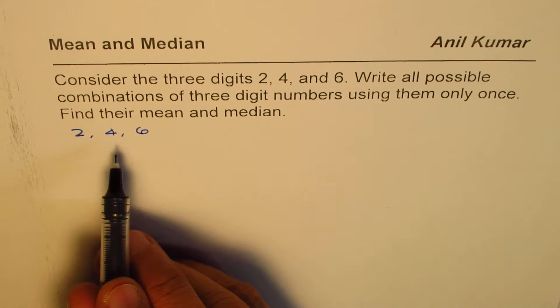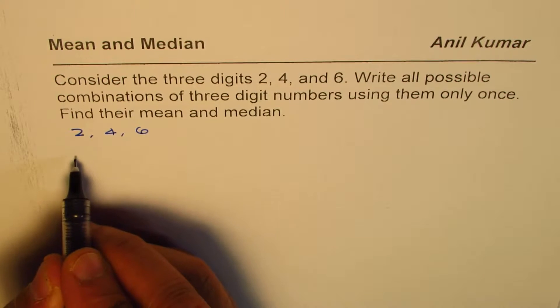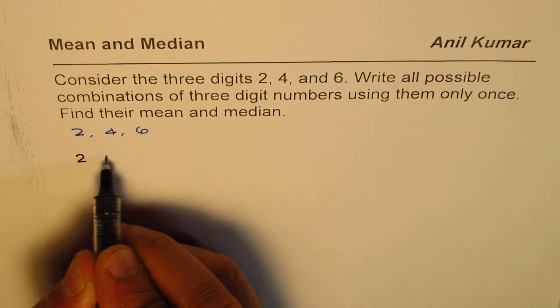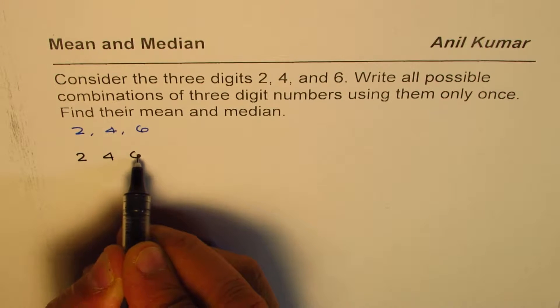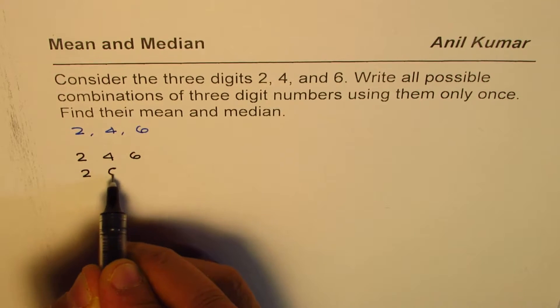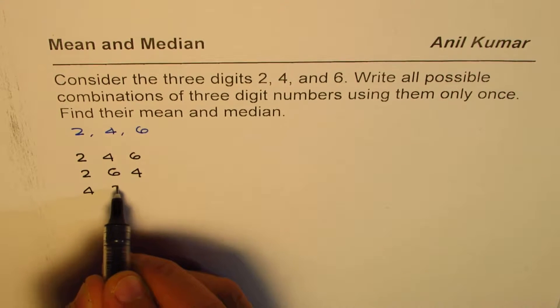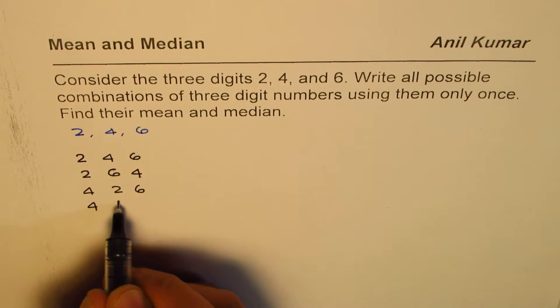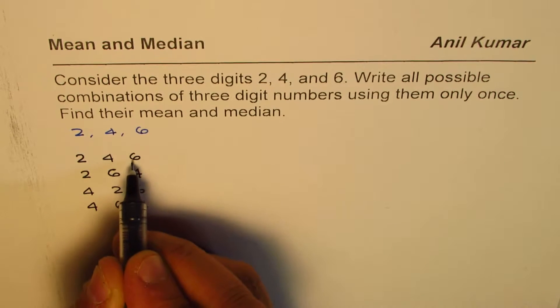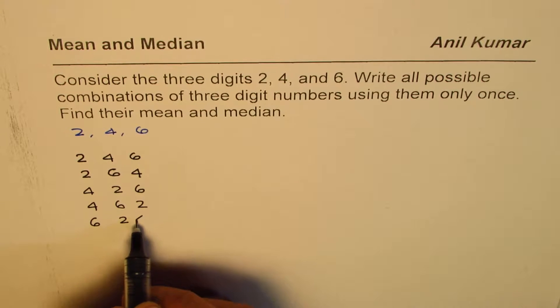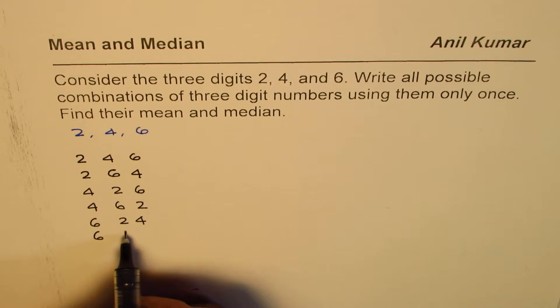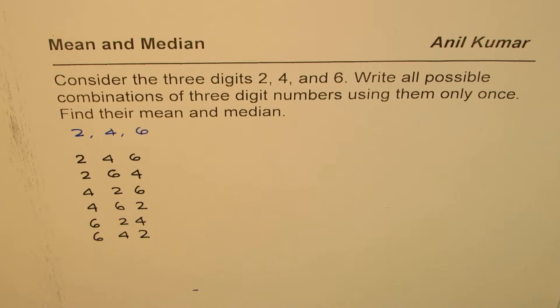So, let's try to first make three-digit numbers. We will write digits, let me write 2 first. With that we could make a number as 246, and then we can also make with 2 first 264. Now, let's take 4 now, 426, or we can write 462. Beginning with 6, we could write numbers as 624 and 642. So, these are possible six three-digit numbers using the numbers 2, 4, and 6 only once.